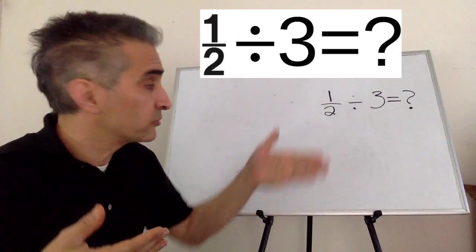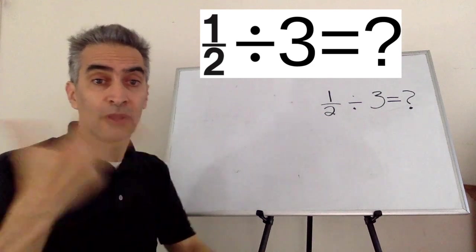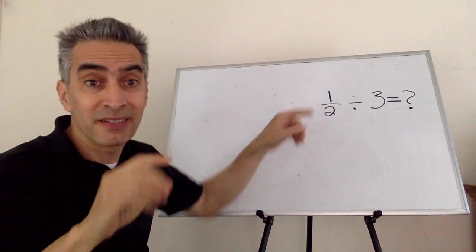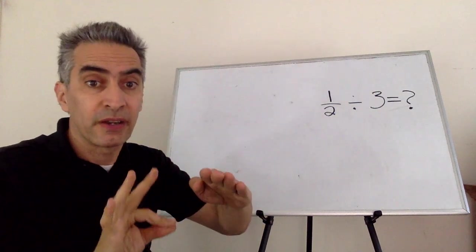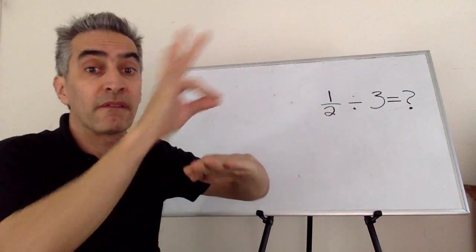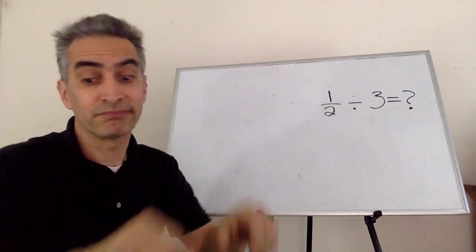Our example problem is one-half divided by three. What are we going to do? Notice this first number is a fraction. We're going to have to change this three to a fraction before we can continue.